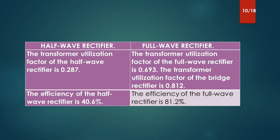The transformer utilization factor of the half-wave rectifier is 0.287. The transformer utilization factor of the full-wave rectifier is 0.693. The transformer utilization factor of the bridge rectifier is 0.812. The efficiency of the half-wave rectifier is 40.6%. The efficiency of the full-wave rectifier is 81.2%.